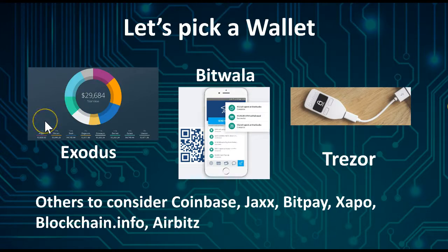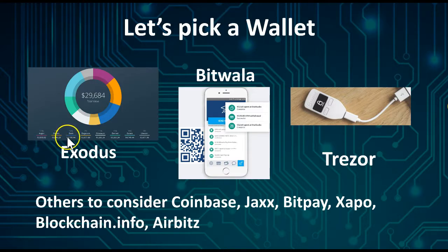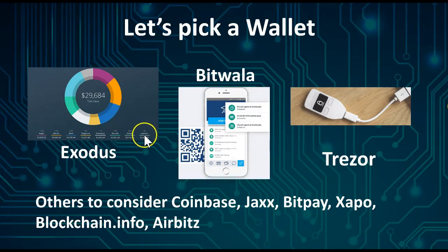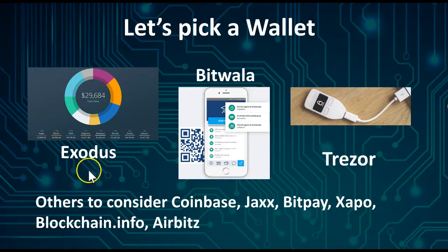You can store not just one coin, so not just Bitcoin. You can store Algorand, Bitcoin, Dash, Dogecoin, Ethereum, Decred, Golem, and Litecoin. So it's not just one coin per se. That's called Exodus – a really great wallet.